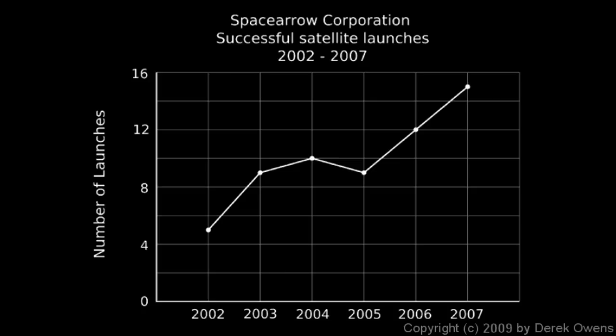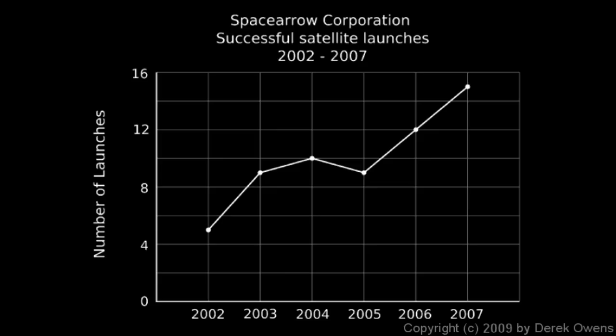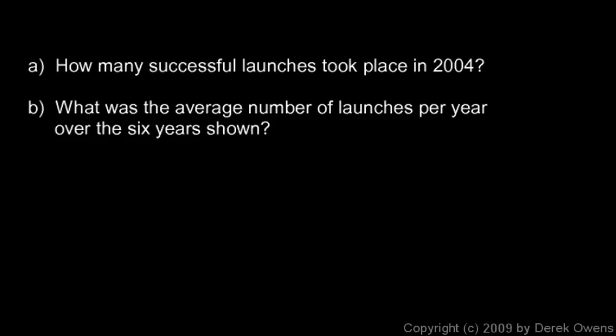Trends are pretty easy to see on a line graph, and that's one of the things line graphs are good for — showing trends over time. We're given a question: how many successful launches took place in 2004? Looking at 2004 on the graph and following that line up, we see the data point corresponds to a position on the vertical axis right between 8 and 12, which is obviously 10. So in 2004, 10 successful satellite launches took place.